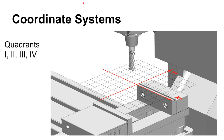A little knowledge can be a dangerous thing, and nowhere is that more true than in CNC programming — this is just a rough introduction. You should be familiar with the Cartesian coordinate system: an X-axis, a Y-axis, and at least a Z-axis. On a CNC machine we can tell the machine where we want the origin to be for the coordinate system we're going to use — for example, naming it G54.